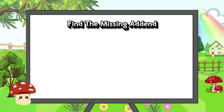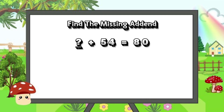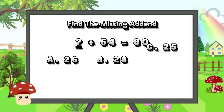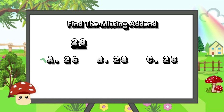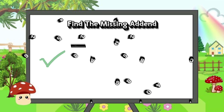Let's find the missing addend. Blank plus 54 is equals to 80. Is it letter A, 26? Letter B, 28? Or is it letter C, 25? And the correct answer is 26. 26 plus 54 is equals to 80.